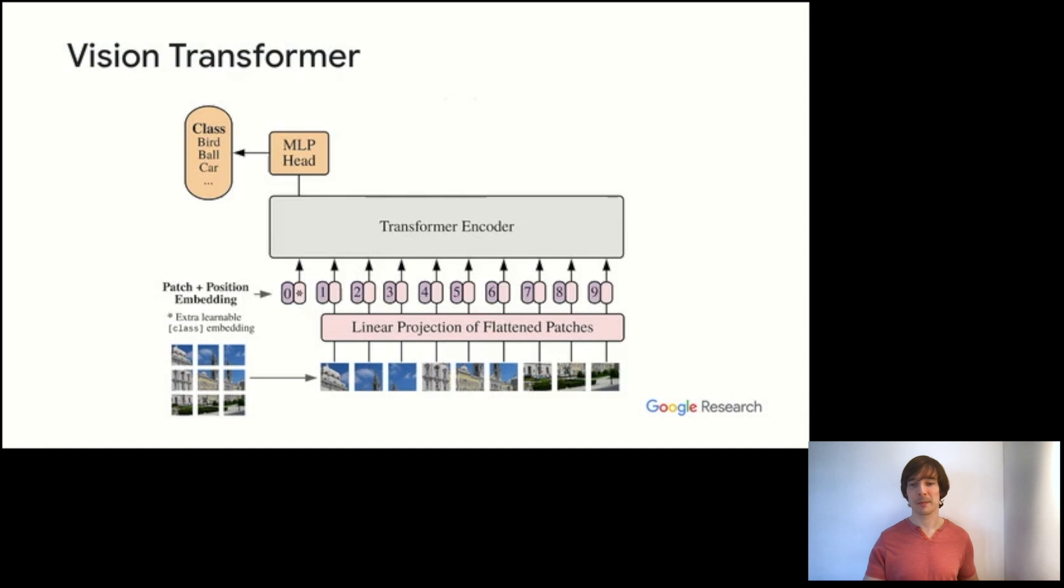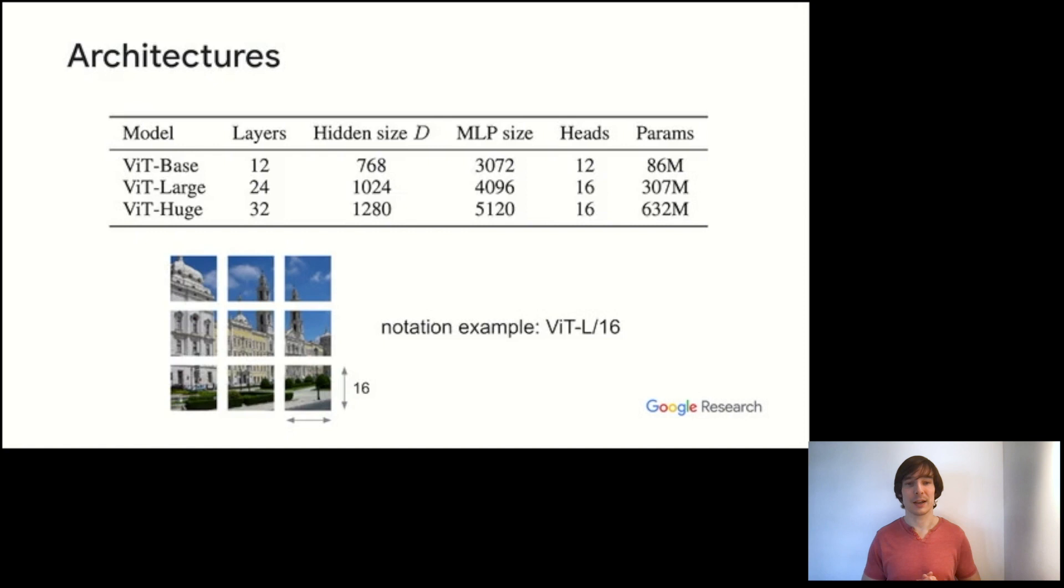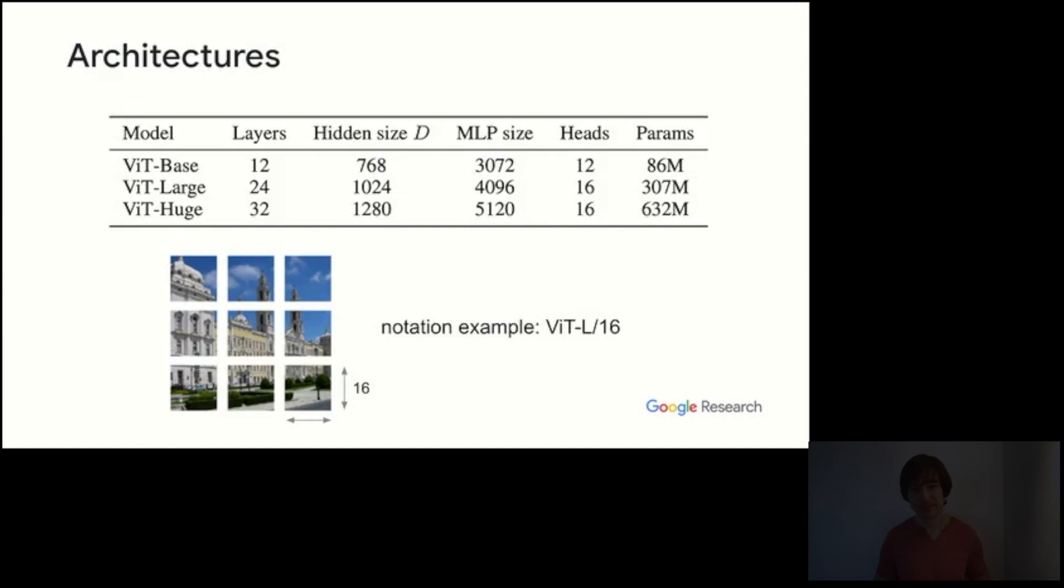We then feed these embeddings into a standard transformer encoder. And again, as for BERT, we have a dummy token that can attend to all the other tokens. And we attach the classification head to the representation for that dummy token.